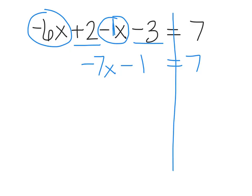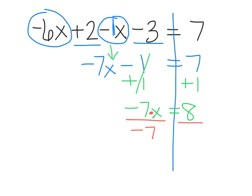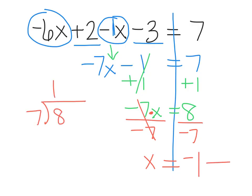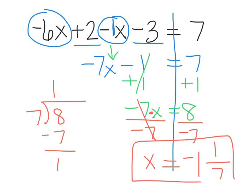I'm going to copy everything else down. Now it's a two-step equation, so I need to get rid of everything else besides the x, starting with what's furthest from x. The minus 1 is furthest from x, so I'm going to add 1 to both sides. These cancel and I get negative 7x equals 8. For the final step, I'm going to undo this multiplication by dividing by negative 7. These cancel and I get x equals negative — positive divided by negative is negative. Setting up long division: 7 goes into 8 one time, with a remainder of 1. So the answer is negative 1 and 1 seventh.